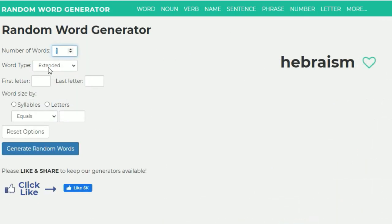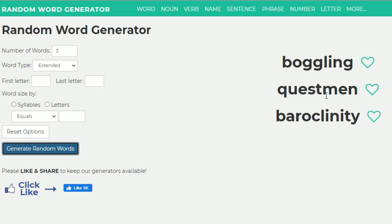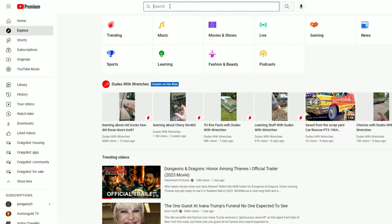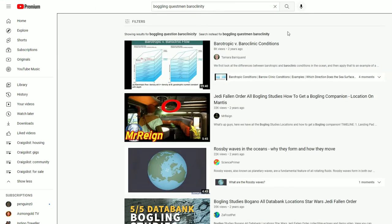On to our next search here we go. Three more words. Let's keep it extended already. Three, two, one. Boggling questmen, baroclinity. I don't know what that means. Let's paste these words in. I have no idea. First hit is barotropic versus baroclinic conditions. 8,000 views, two years ago, Tamara. First, we look at the difference between barotropic and baroclinic conditions in the ocean and then apply that to the example. It's 19 minutes long.